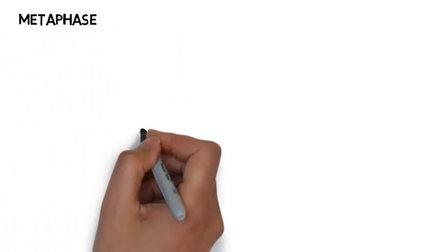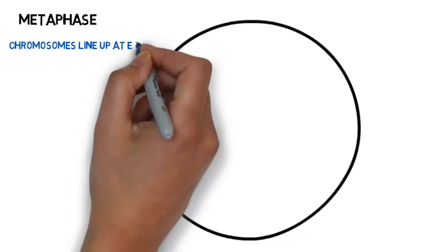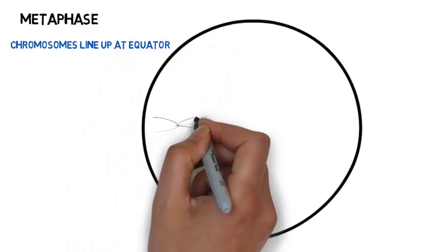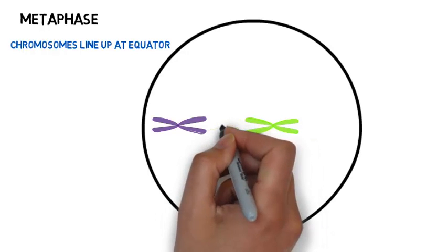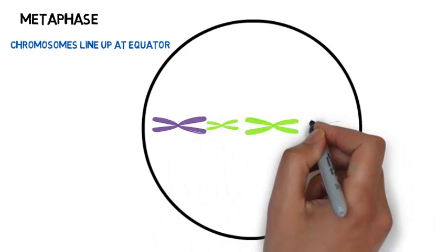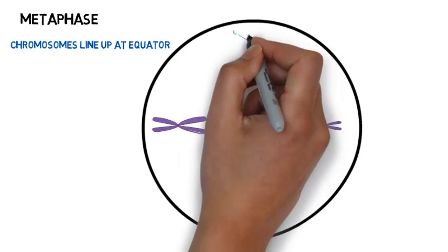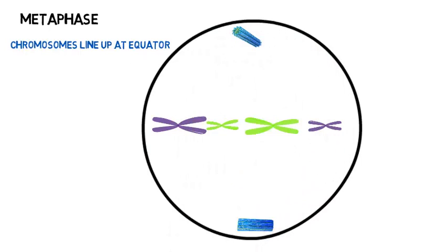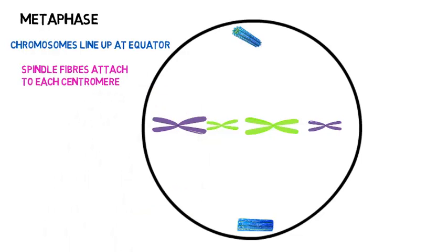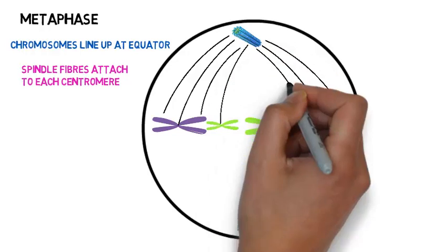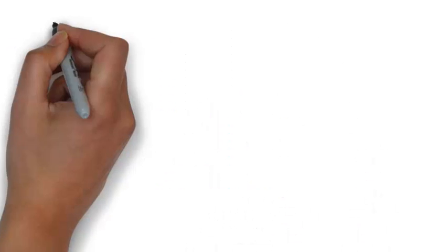The next phase is metaphase. It is at this point that the chromatids line up at the equator — the equator being in the middle of the cell. This ensures genetic stability, so that there are the same number of chromosomes in the parent cell as in the daughter cells. It's important that they line up in the middle so that the spindle fibres can pull the chromosomes apart and each cell receives one of each chromosome. Our spindle fibres then attach to each centromere.